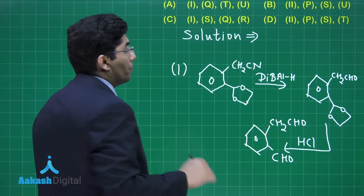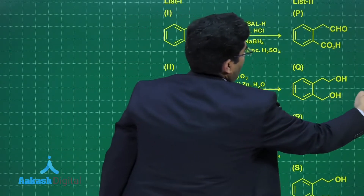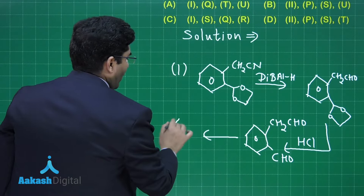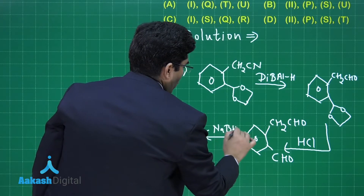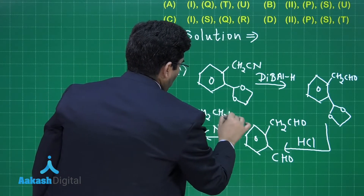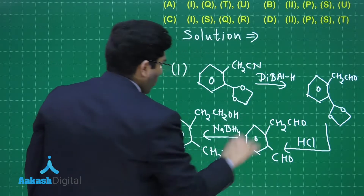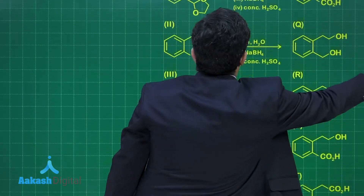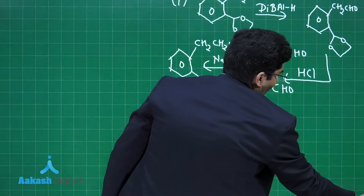Now, NaBH₄ is added after this. NaBH₄ being a reducing agent, it will reduce the aldehyde groups to alcoholic groups. On adding NaBH₄, we will get CH₂CH₂OH and CH₂OH. So this is the product we get. Then, concentrated H₂SO₄ is added, which will dehydrate this compound.